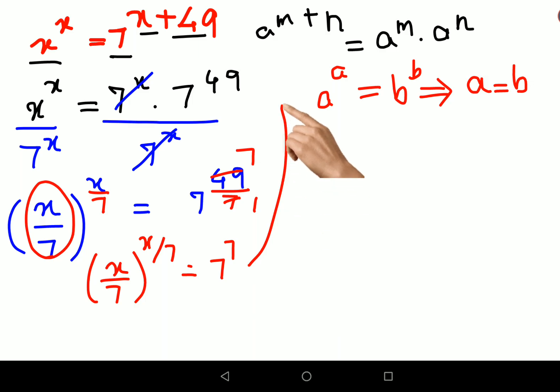So now this is in the form of this pattern, so I can say that x upon 7 equals to 7. Therefore x value is just 49.